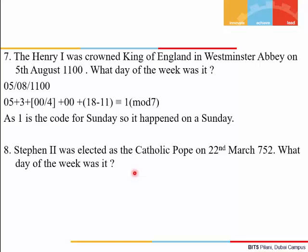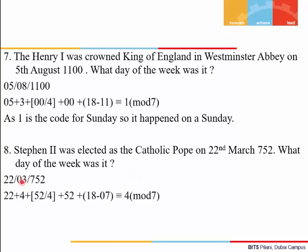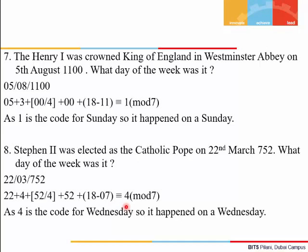Final example: Stephen the Second was elected as Catholic Pope on 22nd March 752. This is also a Julian calendar date, so we subtract the first two digits of the year (07) from 18 for the correction. The result is congruent to 4 mod 7. Since 4 is the code for Wednesday — also called Venus day — it happened on a Wednesday. Thank you.